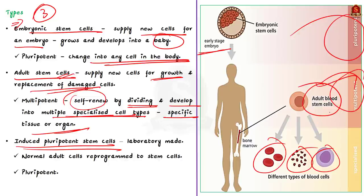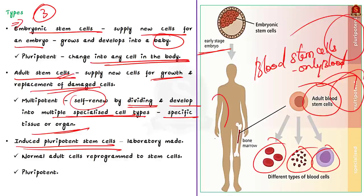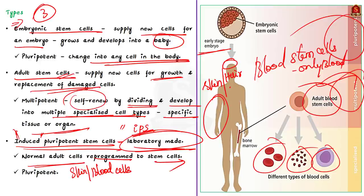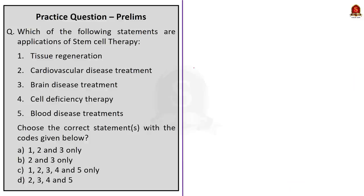For example, blood stem cells can only replace various types of cells in the blood, while skin stem cells provide different cell types that make up our skin and hair. The third type is induced pluripotent stem cells (iPS cells) — stem cells that scientists make in the laboratory by taking normal adult cells like skin or blood cells and reprogramming them to become stem cells. Like embryonic stem cells, they are also pluripotent and can develop into any cell type.